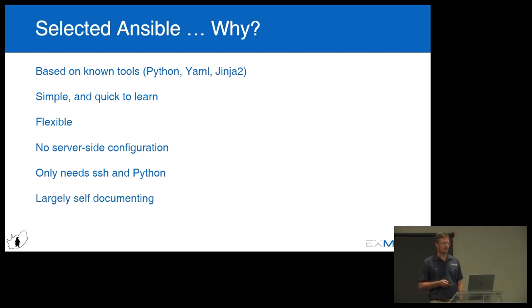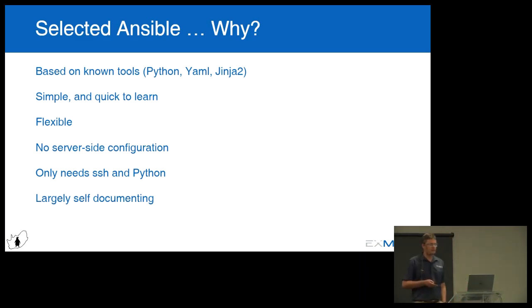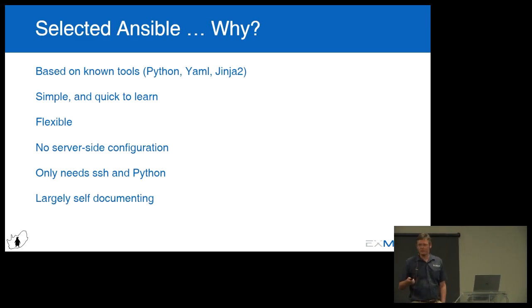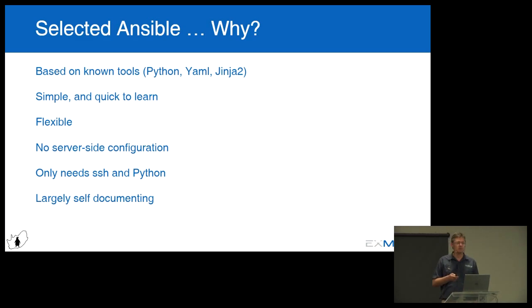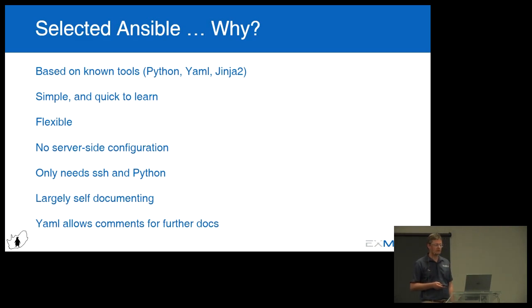Ansible is largely self-documenting. YAML allows commenting, unlike JSON where there's no possibility to make comments, which is very frustrating. With YAML you can comment as much as you need. It's quite flexible — our use case was not a problem to implement with it.